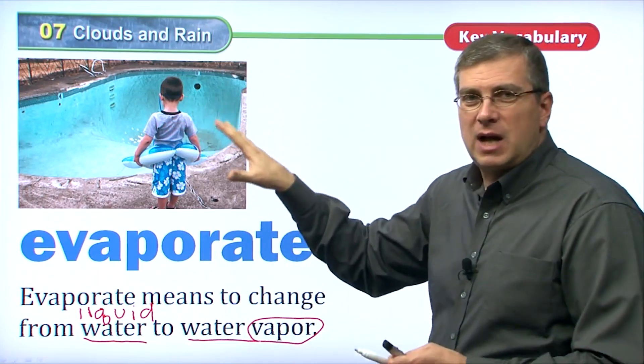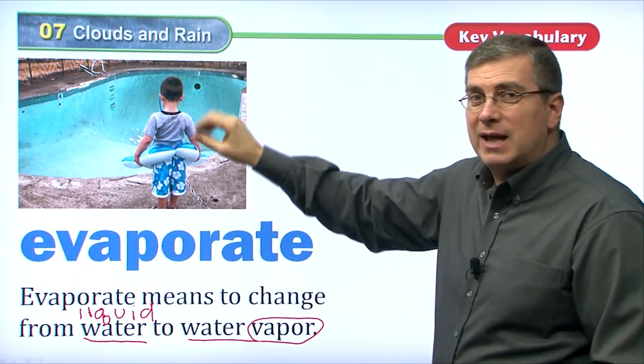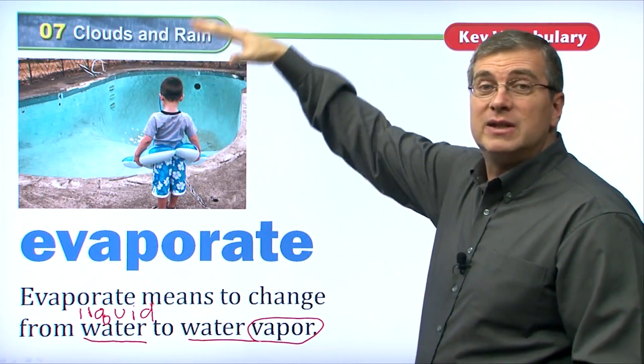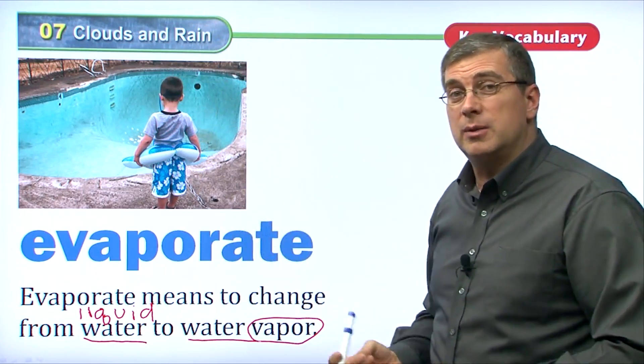So when the water gets hot, when the sun beats down, the water changes from liquid to a gas, to water vapor. It rises into the sky, and it forms that cloud that we just saw on the previous slide.